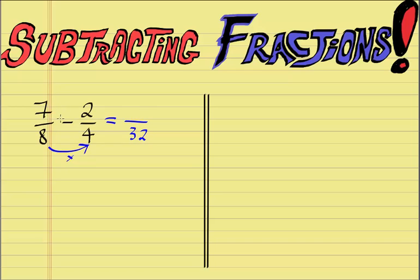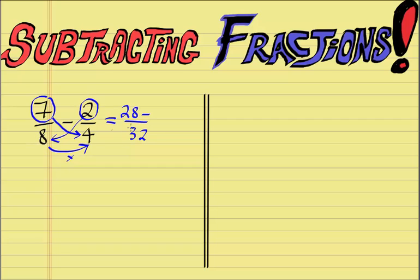It's really important that you keep this order, otherwise the answer won't be right. First, we times the numerator of the first fraction by the denominator of the second fraction. This is really, really important. So 7 times 4 is 28. We write that in there. We carry our subtraction sign, and then we multiply the numerator of the second fraction by the denominator of the first fraction. So 2 times 8 is 16. We go ahead and subtract 16 from 28, which is 12. Then we keep our original denominator at 32.